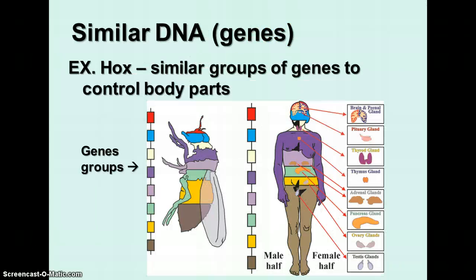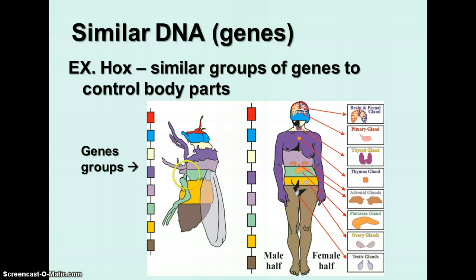Another homology is similarity in DNA. There are sets of genes called Hox genes — groups of genes that control different parts of the body. The same groups of Hox genes are found biochemically similar in both fruit flies and in humans. For example, the red Hox genes control the top of the head in both, and the light blue ones control the abdomen area, showing strong similarity in the genes and the body parts they control.